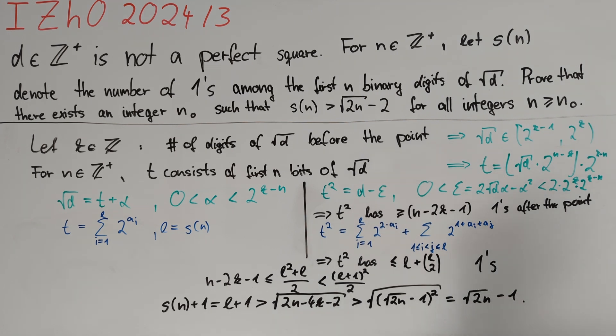Subtracting 1 from both sides yields the desired result, and therefore we are done.